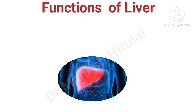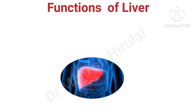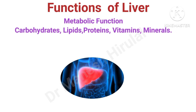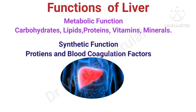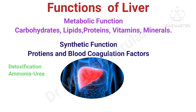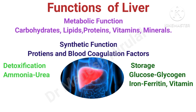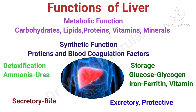Liver is one of the most important glands in the human body and performs multiple functions. It is the center of carbohydrates, lipids, protein, vitamins and mineral metabolism. It synthesizes different proteins and blood coagulation factors. Liver detoxifies ammonia into urea, stores glucose in the form of glycogen and iron in the form of ferritin. It also stores many vitamins, secretes bile, and plays a major role in excretory and protective mechanisms.